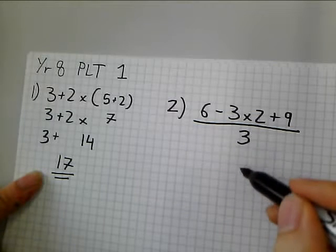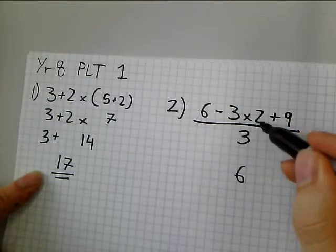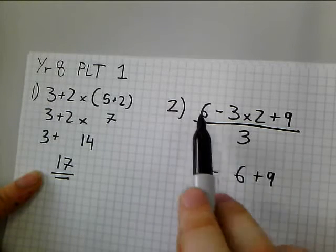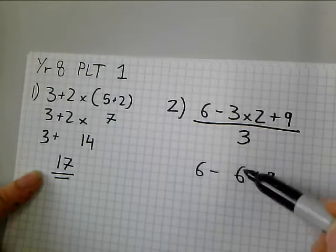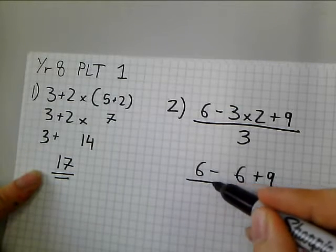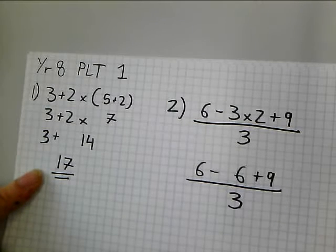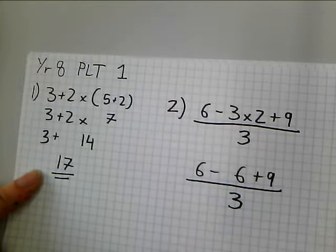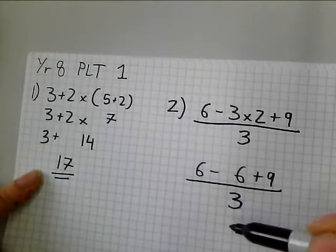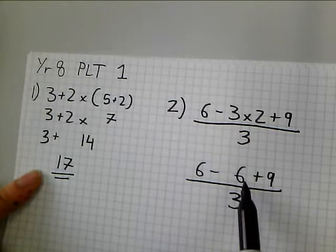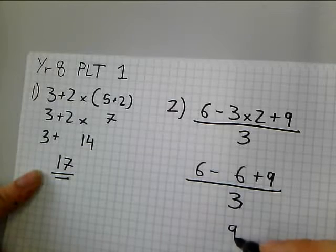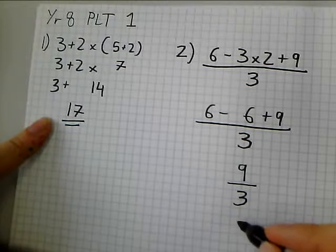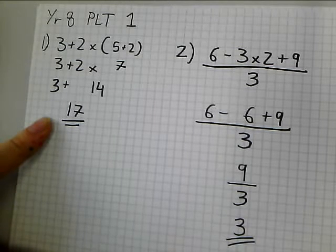So 3 times 2 is equal to 6, and that 3 times 2 becomes a 6. I'm left with plus 9, and then 6 take away. So that 6 take away is brought down. The 3 times 2 becomes 6. The plus 9 stays as it is, and then that's all divided by 3. Now here I've got a choice. I can either divide everything here by 3, or I can just evaluate this top line. It doesn't really matter. I'm going to evaluate the top line. So 6 take away 6 is 0, and 0 plus 9 is 9. So I'm left with 9 divided by 3, and then 9 divided by 3 is equal to 3. And that's my final answer for question 2.